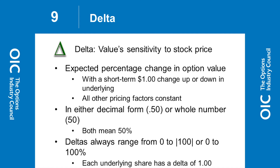Deltas range from zero to 100. A 100-delta option is just like stock – if the stock goes up a dollar, the option goes up a dollar; if the stock is down a dollar, the value of the option goes down a dollar. If you've got an option with a 50 delta, as the stock goes up a dollar, the option value with all other pricing factors remaining constant should go up 50 cents.